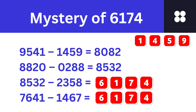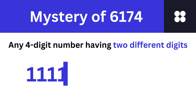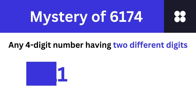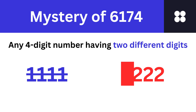You are again and again iterating with the same number 6174. For this to work, you have to choose a 4-digit number having at least 2 different digits. You can't choose 1111 or 2222 — at least one digit has to be different.